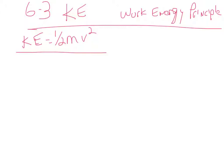If I double the mass, I'm just multiplying the whole equation by two. But if I double the velocity, you're squaring it — that makes it four times greater. So the kinetic energy is four times greater when you double the velocity. That's a big difference.